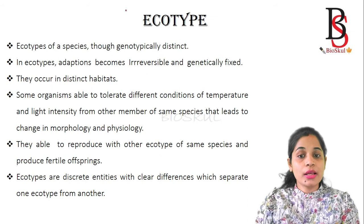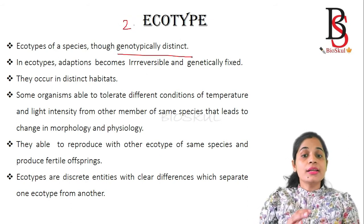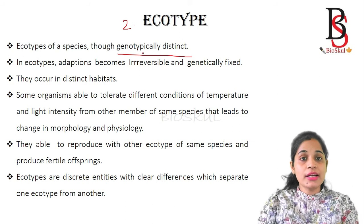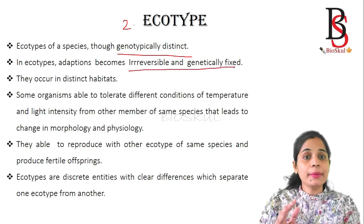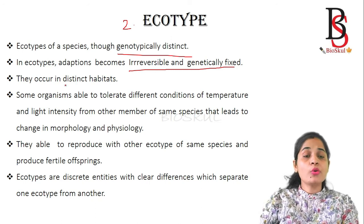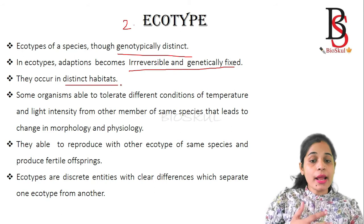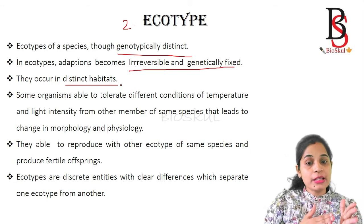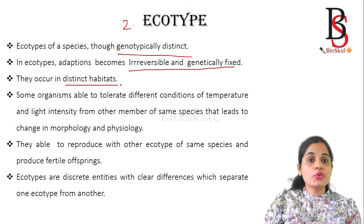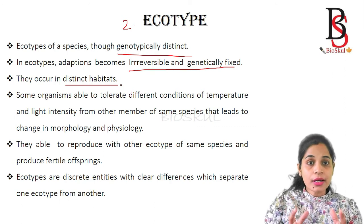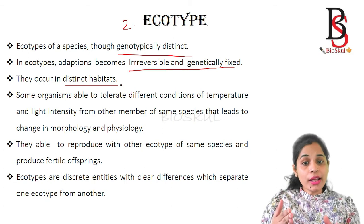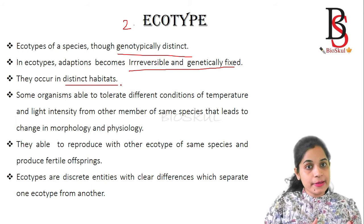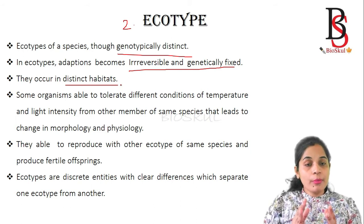The second form is known as the Ecotype. Ecotypes of a species are genotypically distinct and those changes are irreversible and genetically fixed. Ecotypes of a species are found in distant habitats, as some organisms are able to tolerate different conditions of temperature and light intensity compared to other members of the species, leading to changes in morphology and physiology. Ecotypes of a species can reproduce with other ecotypes of the same species and that leads to the formation of fertile offspring.